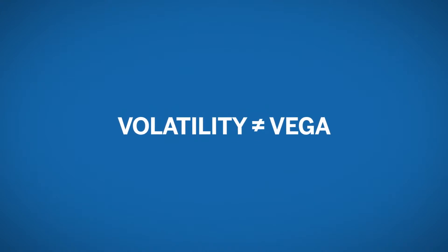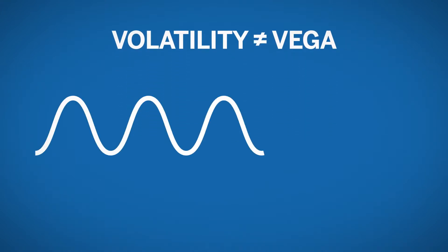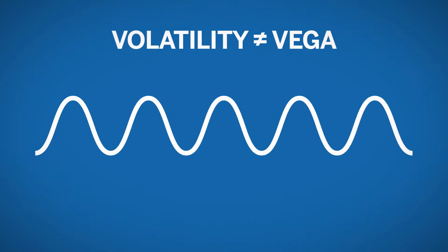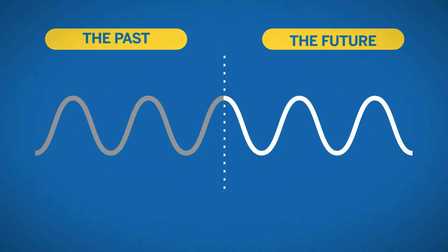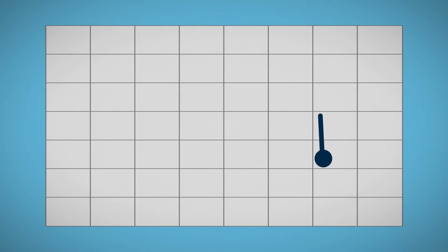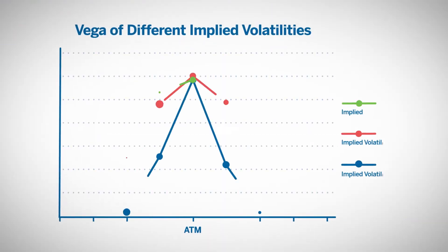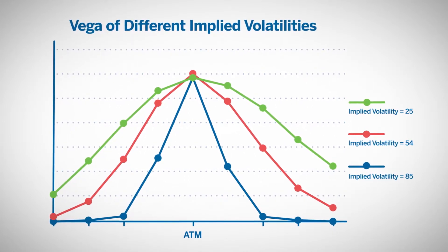Volatility should not be confused with Vega. Volatility is either the historical or expected bounciness of the underlying future. Historical volatility is volatility in the past and is therefore known. Implied volatility is based on the current option prices and reflects the collective market participants' view of the future — whether an expectation of a quiet market or a more turbulent one. Whereas Vega is the sensitivity of a particular option to changes in implied volatility.